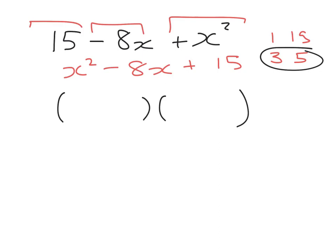Now to make negative 8, they must both be negative 3 and negative 5, and incidentally, when I multiply those together, they will make the positive 15. Alright, so there's our x minus 3 and our x minus 5.